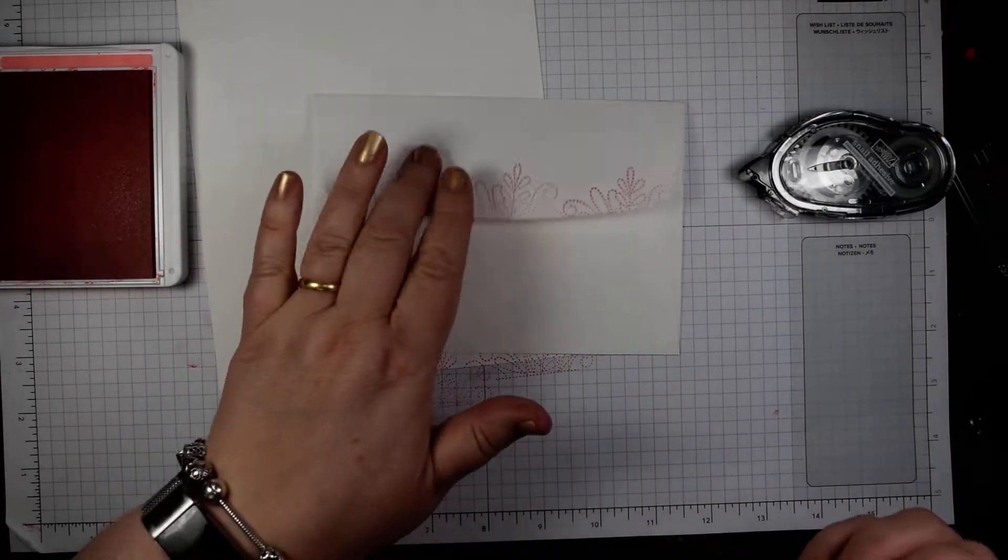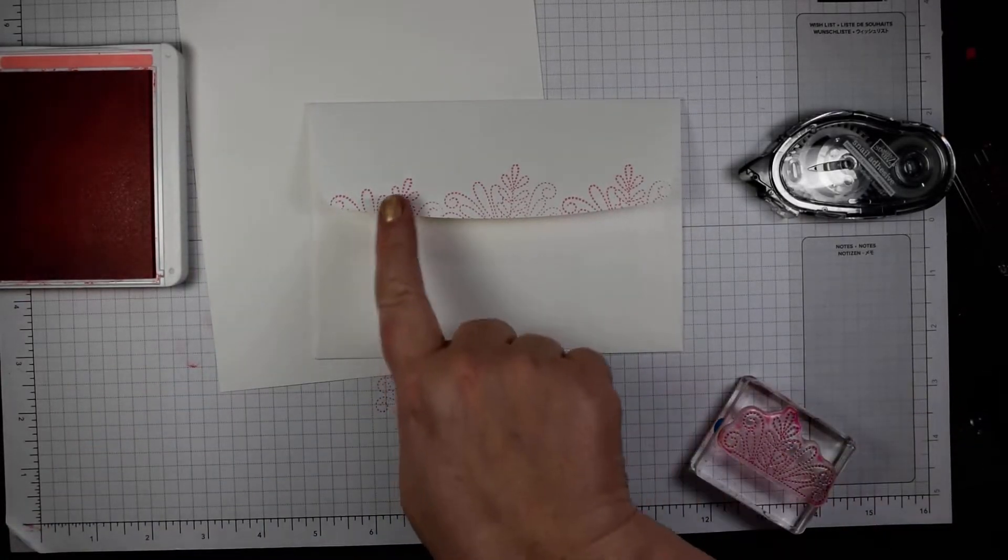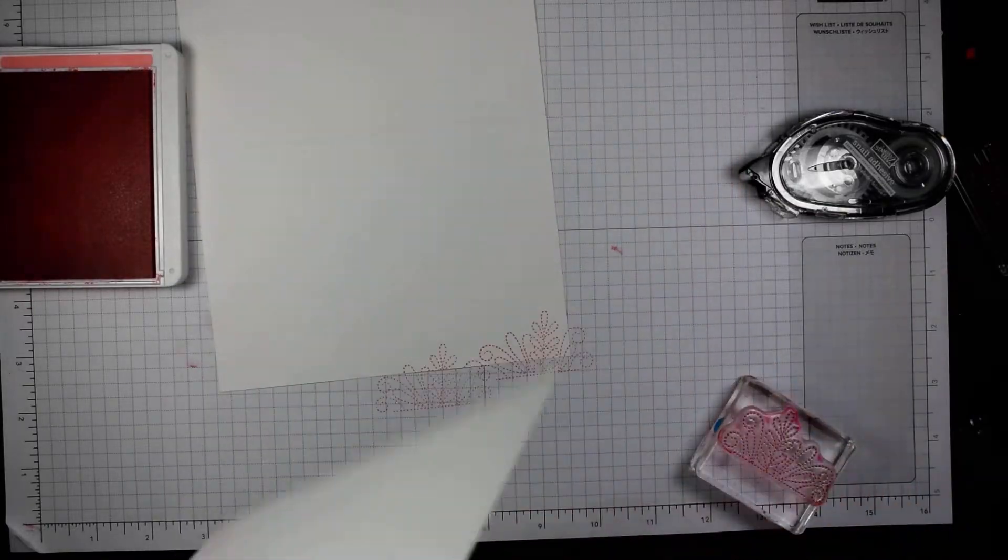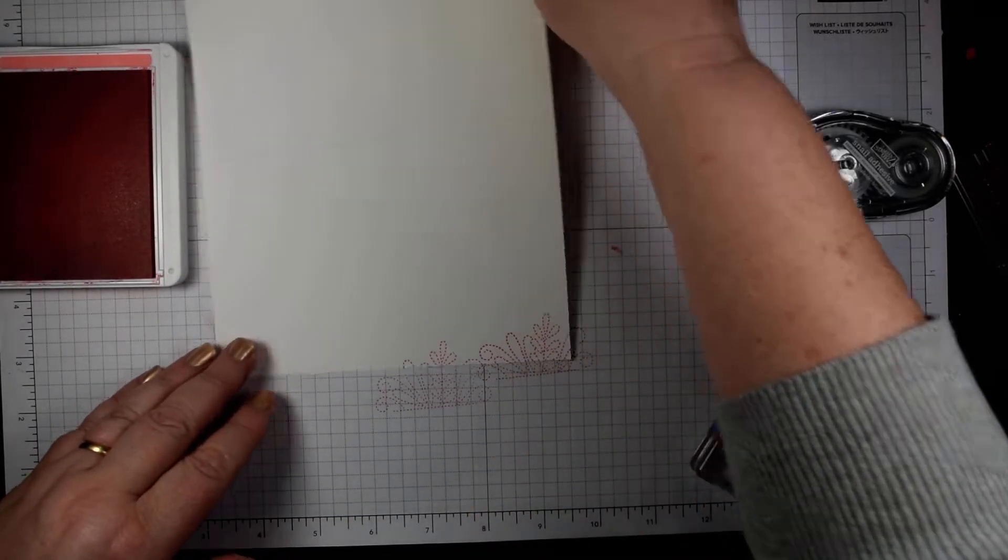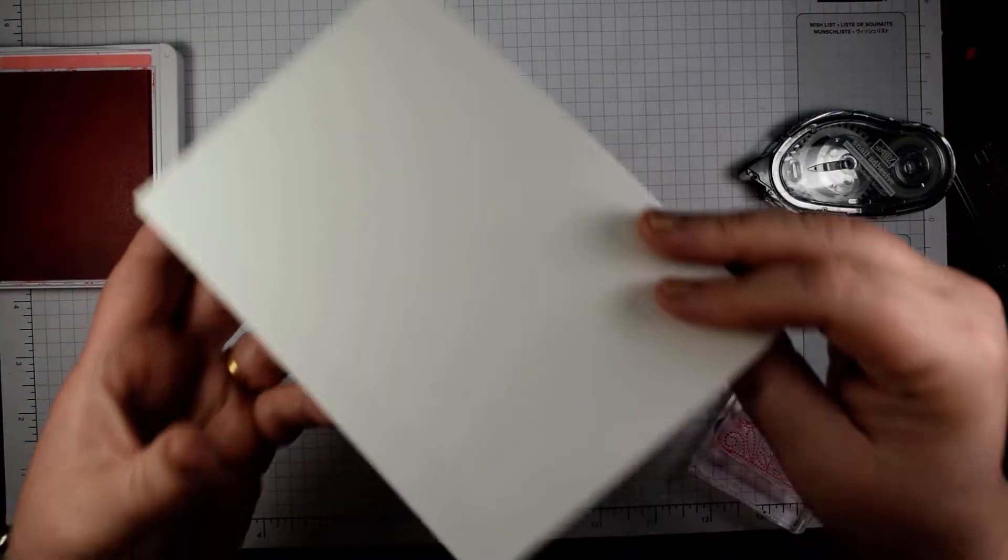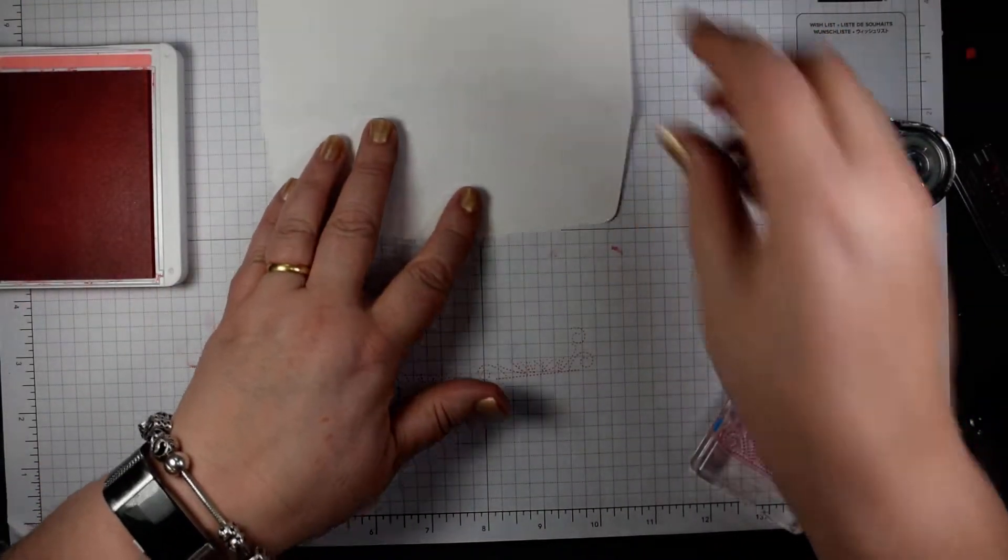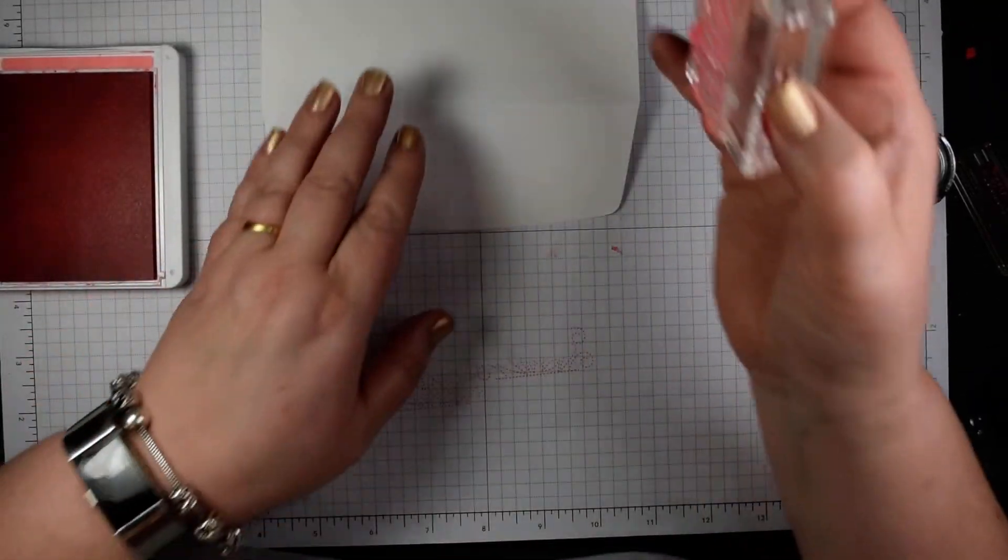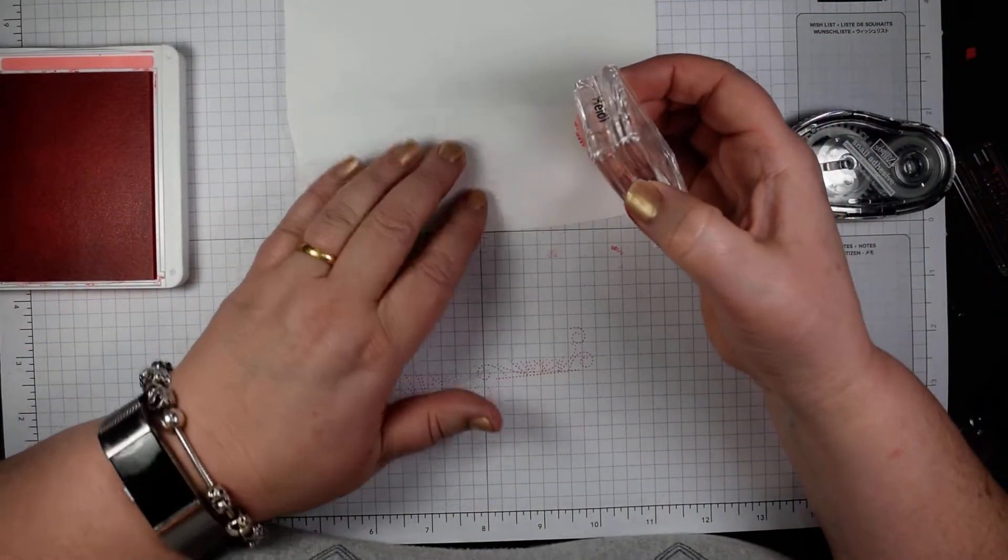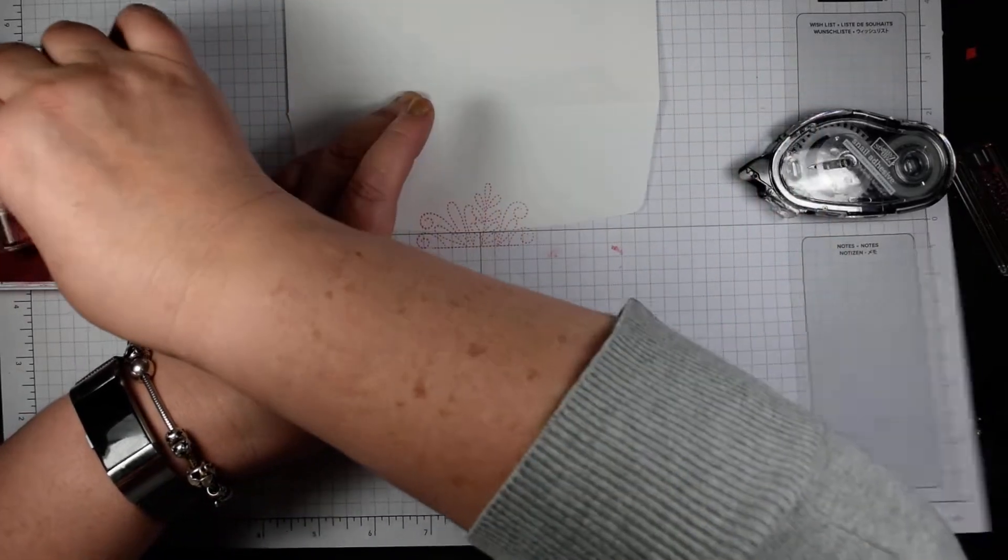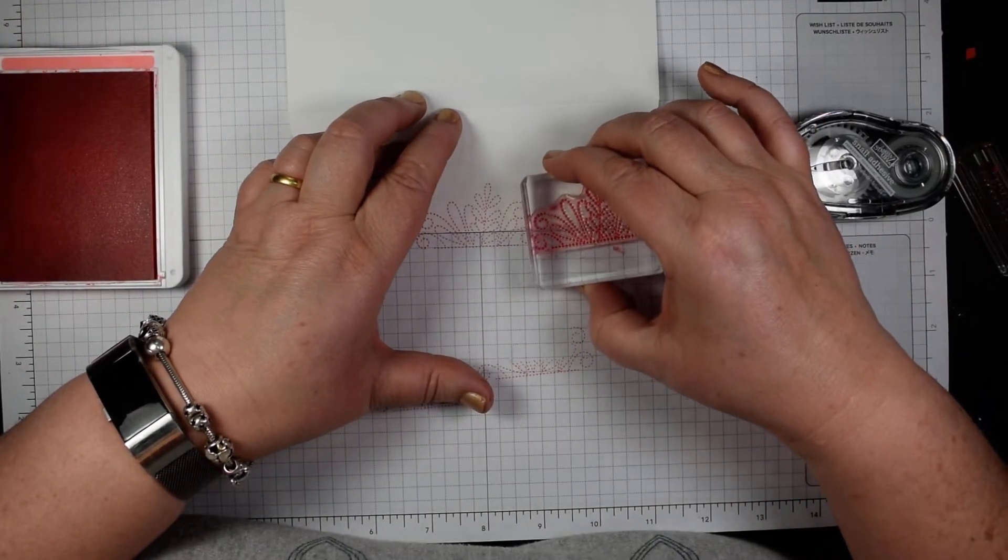You'll see I've done the same on the envelope already, so I've just taken that across that edge. And you do that by just opening out the flap of the envelope, and the best thing to do is try and get it fairly central. Do your central one and then work out from that one.